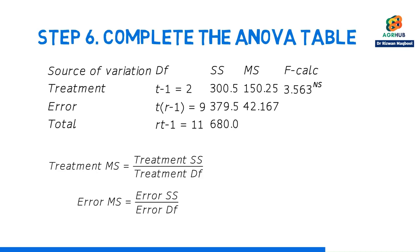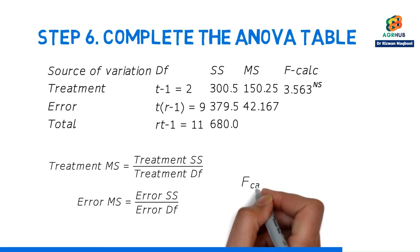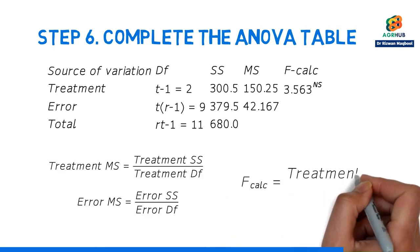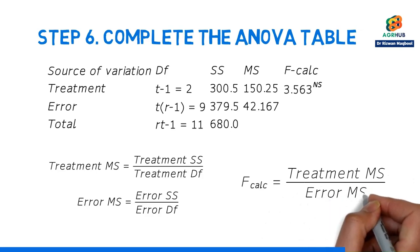We need to fill MS column in. We're looking at the mean square for treatment and the mean square for error. To do that, we'll divide the sum square for treatment by its degrees of freedom, 300.5 divided by 2 gives us 150.25. Then, we'll take the sum square for error, 379.5, and divide it by 9, giving us 42.167. From there, what we want to do is calculate F. Formula for F calculated is treatment MS divided by error MS.